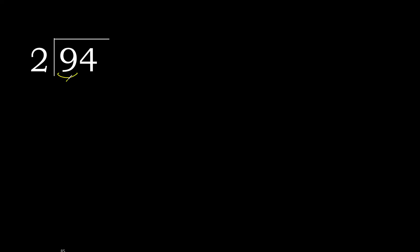94 divided by 2. 9 — 2 is not less, so with 9: 2 multiplied by which number is nearest to 9 but not greater? 2 multiplied by 5 is 10, which is greater. Multiply by 4 is 8, and 8 is not greater. 9 minus 8 is 1.